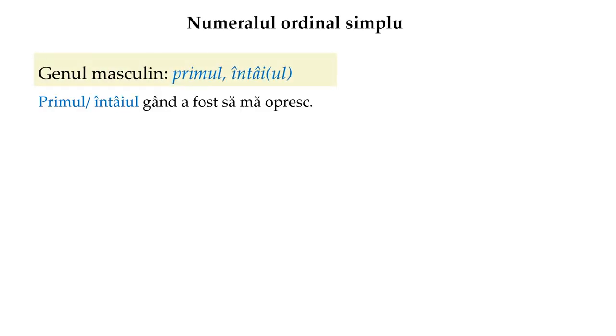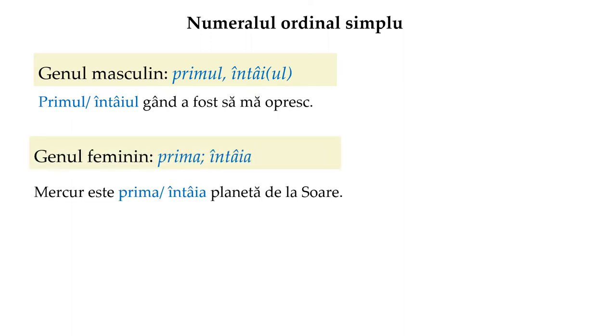Numeralul ordinal simplu are forme pentru genul masculin: primul, întâi sau întâiul, iar pentru genul feminin: prima, întâia.